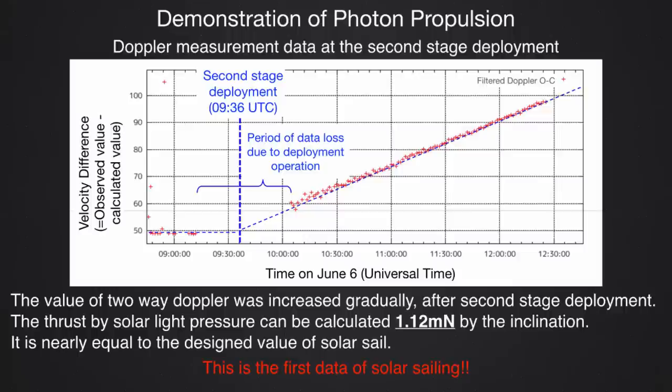This slide shows the demonstration of photon propulsion. This data is the Doppler data from communication between Earth and Ikaros. The vertical axis denotes the velocity difference between the observed value and the calculated value. The sail is deployed at this time. Before deployment, the difference between observed and calculated values is flat, but after deployment the Doppler changes linearly. From this velocity difference, we estimate the acceleration by the solar sail, and calculated that the thrust by solar radiation pressure is about 1.12 millinewtons.